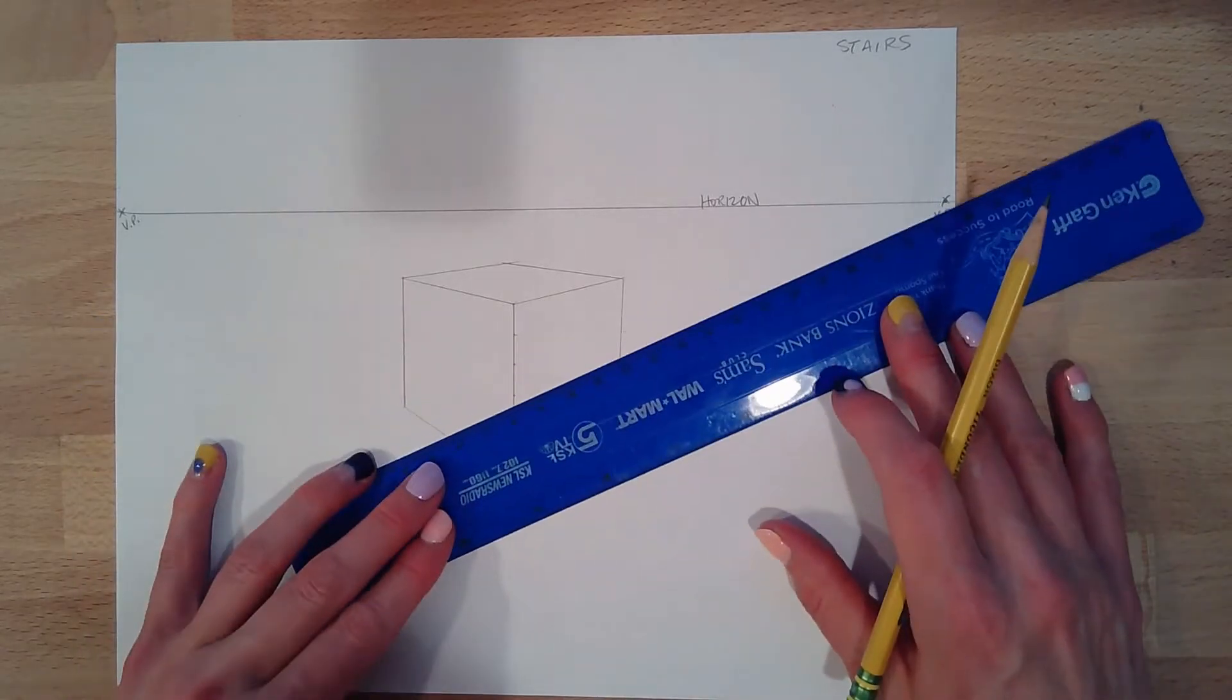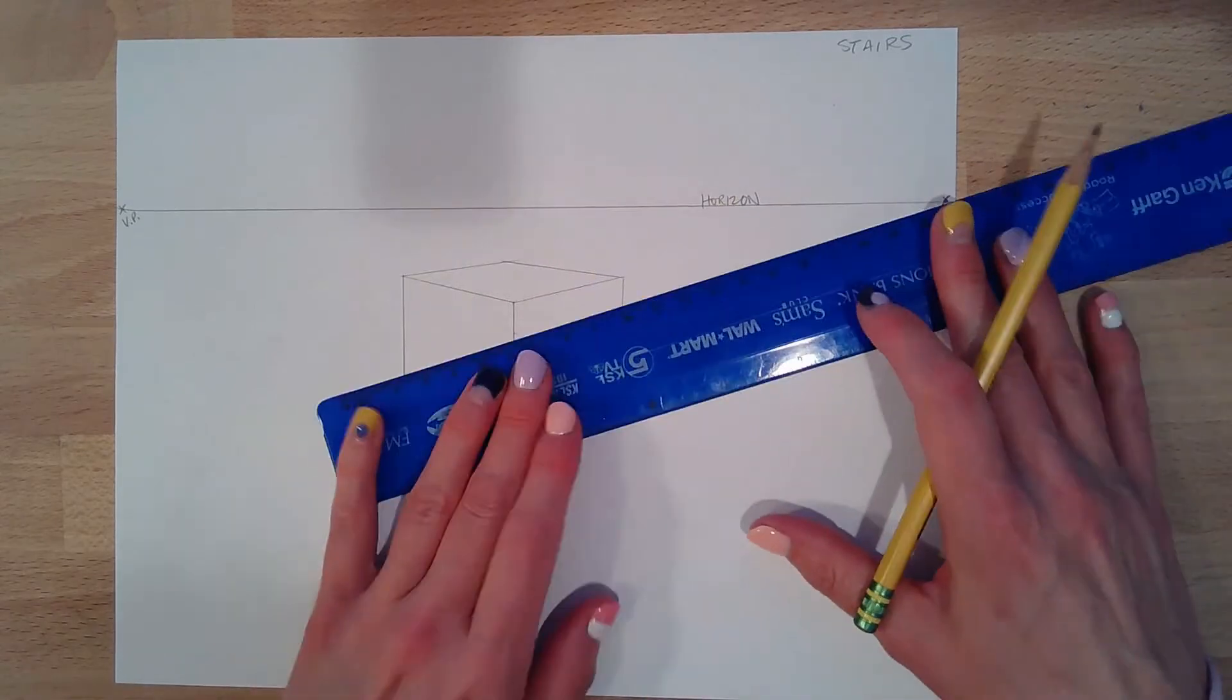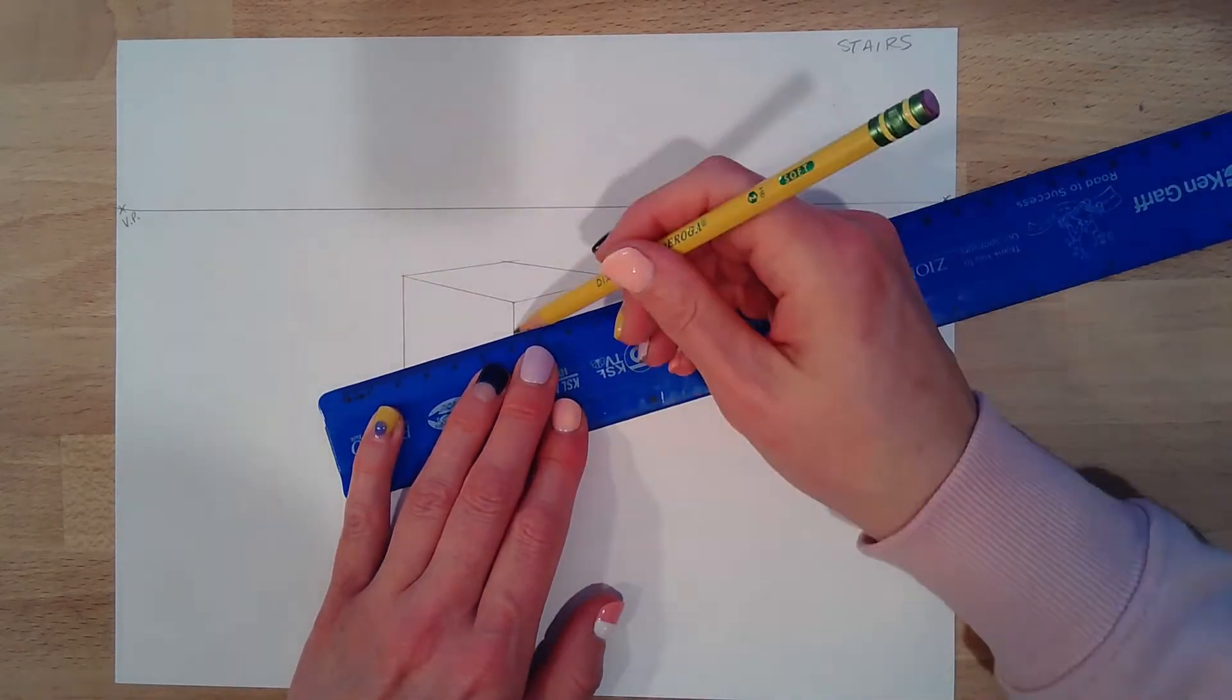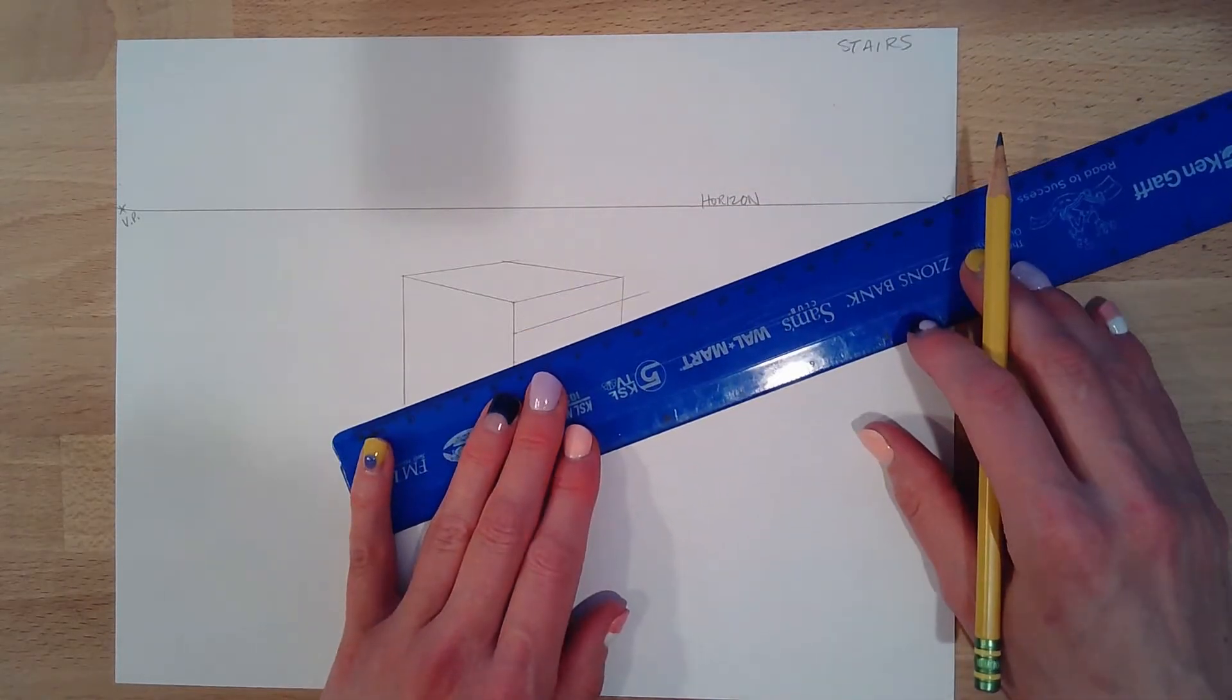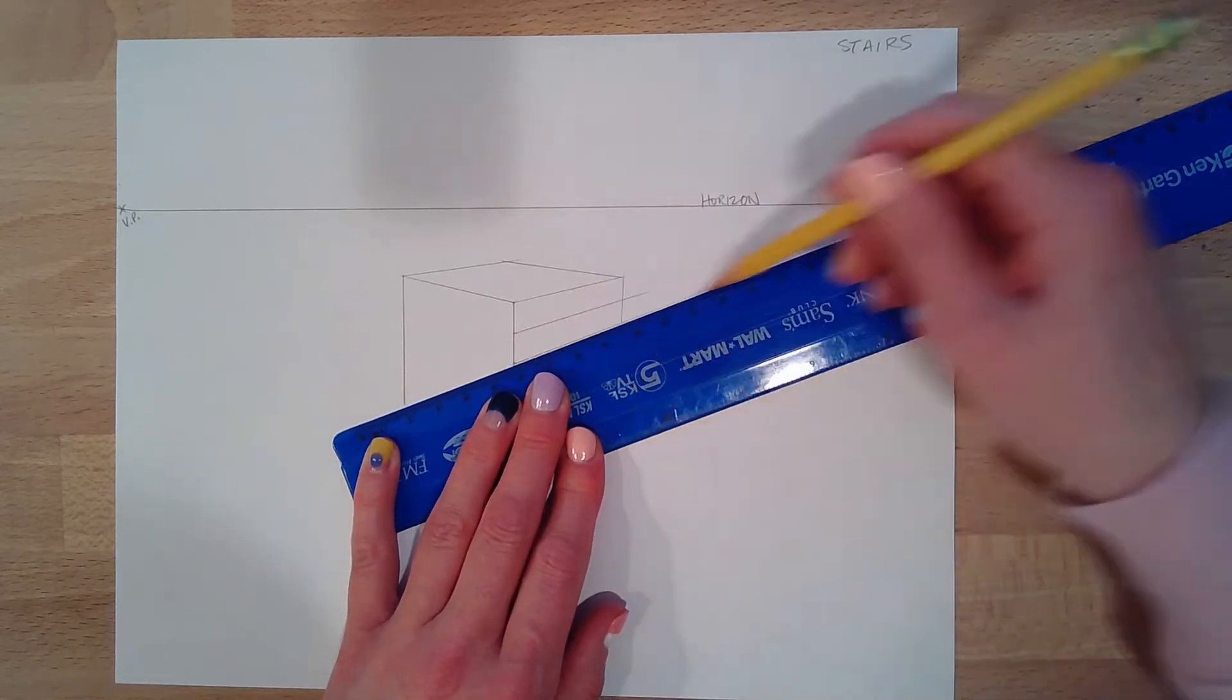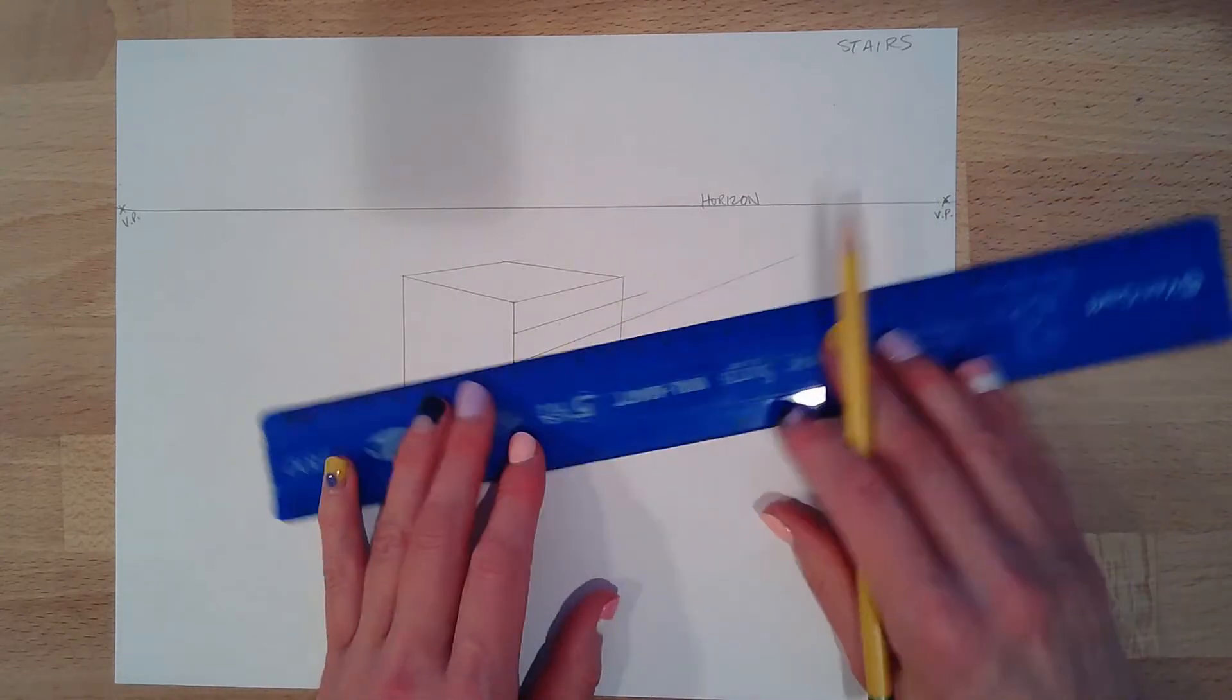So what I'm going to do is I want to start with my right vanishing point because my stairs are going to go to the right side. And I'm going to draw the top of the stairs. And I'm going to just jet my line out slightly. I don't want to erase a ton. I'm sorry if that bothers you.